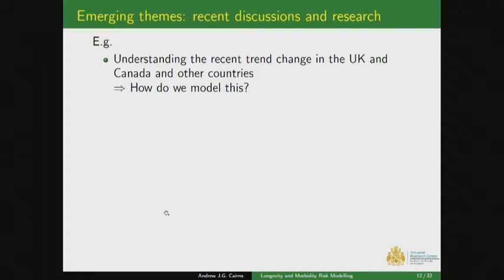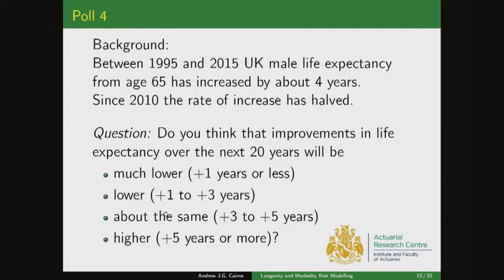During the programme we'll also look out for emerging themes in the mortality area. One example is the growing discussion in the UK and Canada about whether there has been a step change in rates of mortality improvement. Between 1995 and 2015, UK male life expectancy from age 65 increased by about four years. However, in the last five of those years the rate of increase approximately halved — to roughly two years per 20 rather than four years per 20.